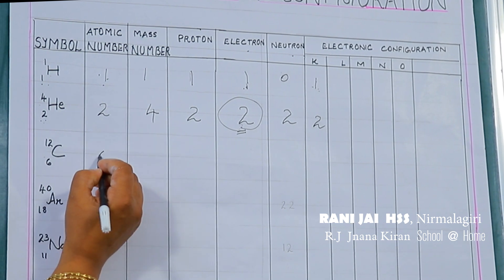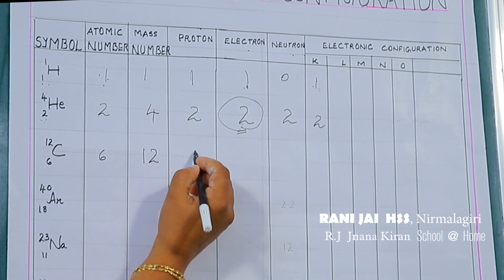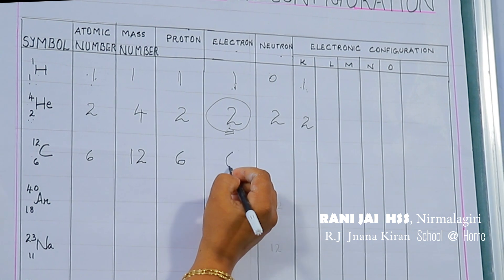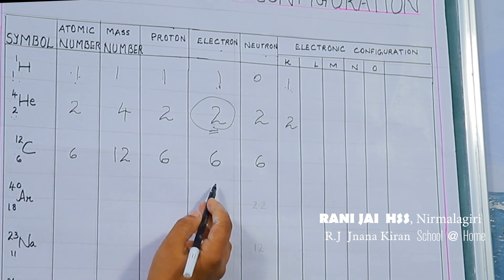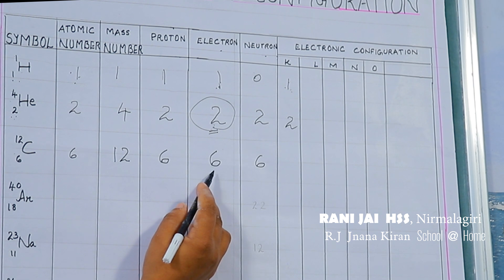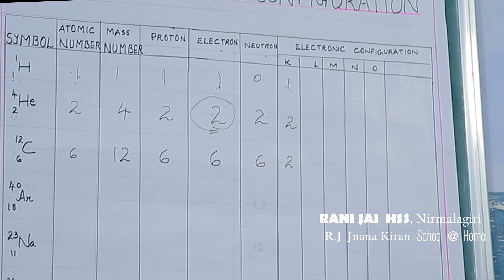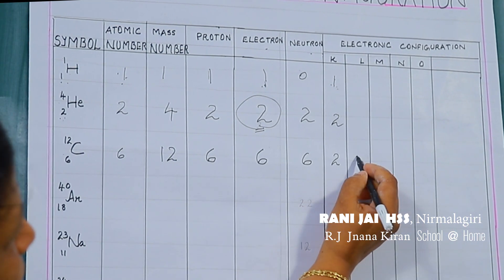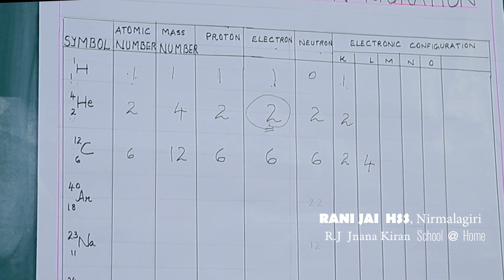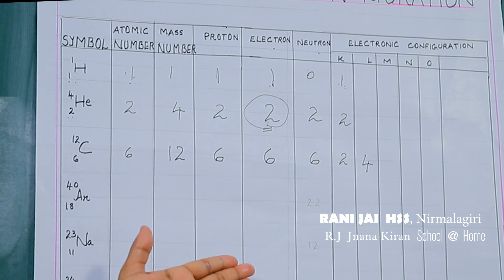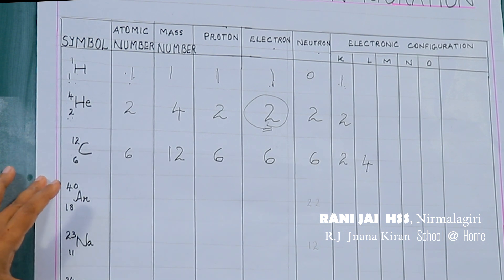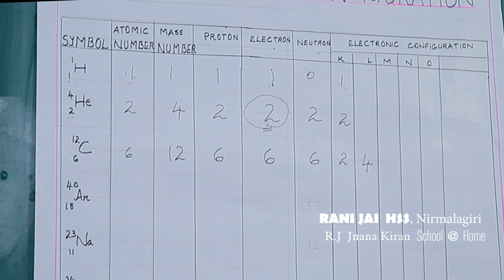For carbon: atomic number 6, mass number 12, protons = 6, electrons = 6, neutrons = 12 − 6 = 6. Electronic configuration: K shell gets 2 electrons, L shell gets the remaining 4. Try to complete this table and draw the Bohr model of all these atoms in your science diary.